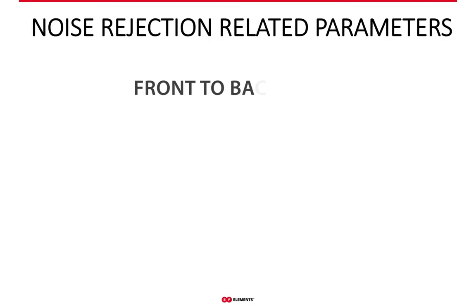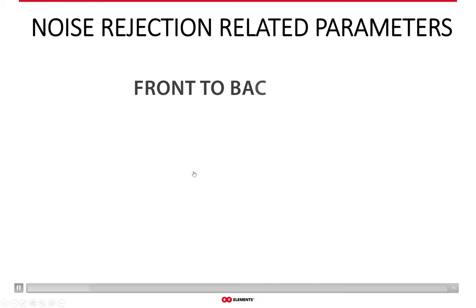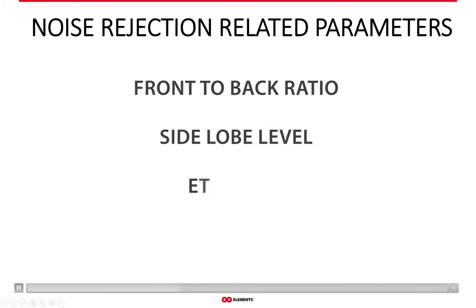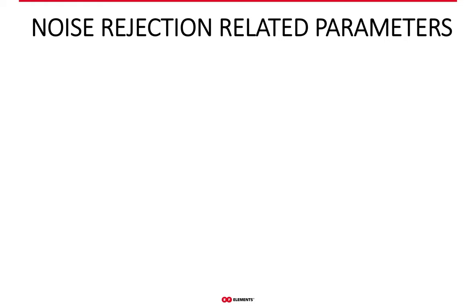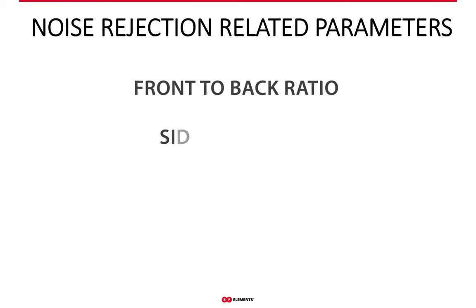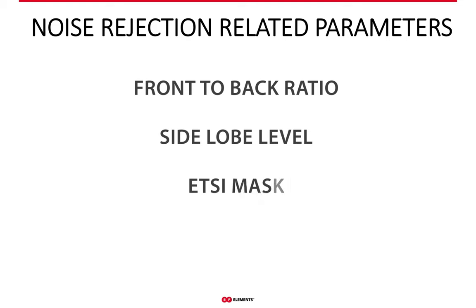The parameters usually considered relevant when speaking of the ability of an antenna to mitigate interference are front-to-back ratio, side lobe levels, or ETSI masks. These you most likely know or at least heard about. The one we at RF Elements believe is the most important in terms of noise suppression is beam efficiency.